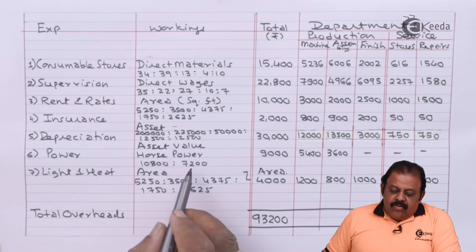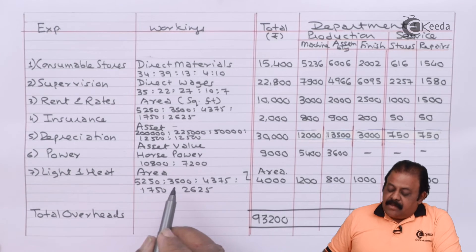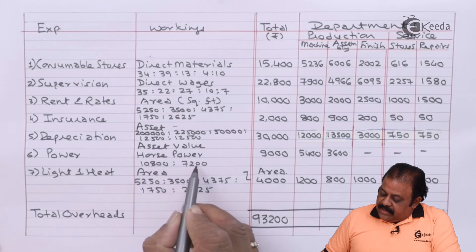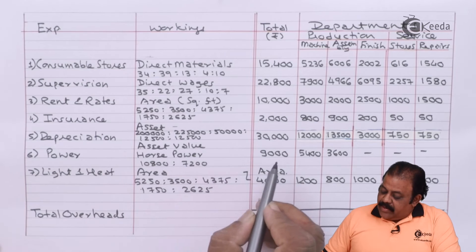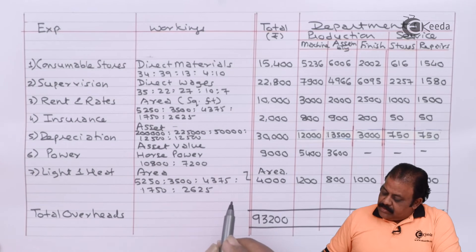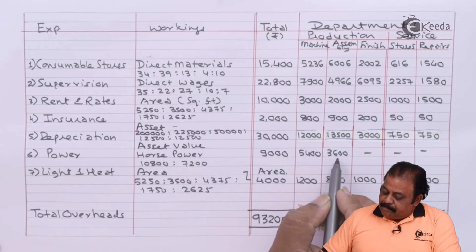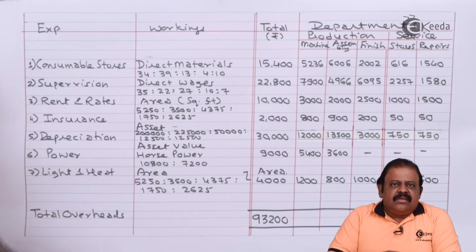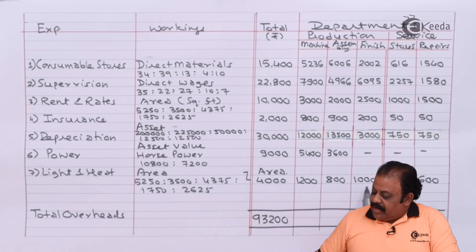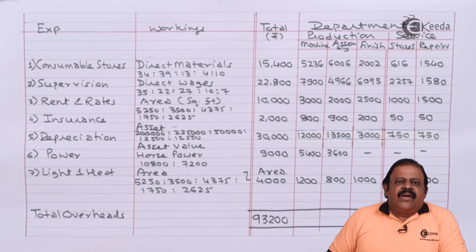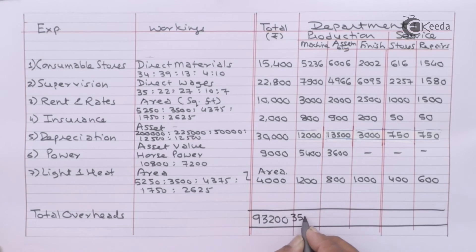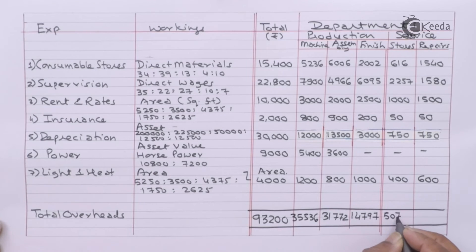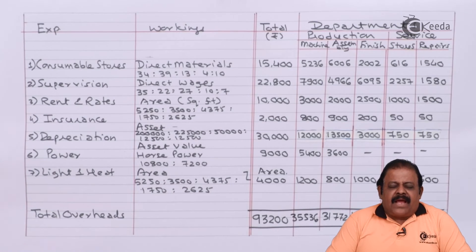Power is allocated for two departments: machine shop and assembly shop — 10,800 and 7,200, giving rupees 9,000, which splits to 5,400 and 3,600. Lighting and heating of 4,000 is allocated based on area data: 1,200; 800; 1,400; and 600. So we have divided all expenses, and now we will take column totals to arrive at the primary distribution of overheads.